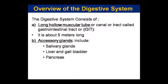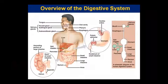The GIT has accessory glands: salivary glands, liver, gallbladder, and pancreas. All of these things have been studied, but there is a different method and different way of writing that you will also encounter. We have studied this, so the digestive system overview will now be looked at.